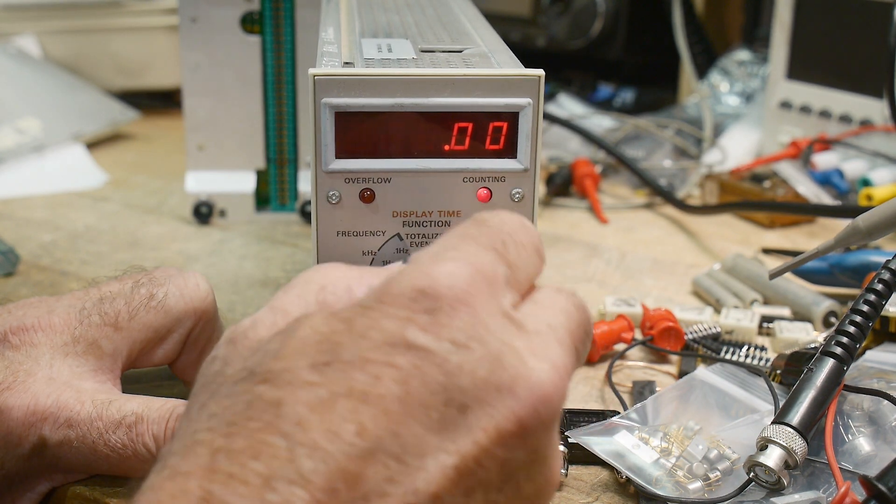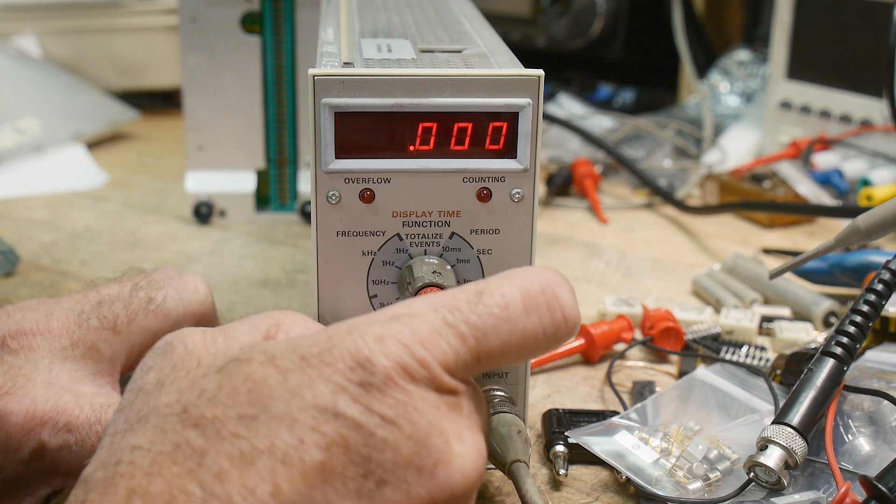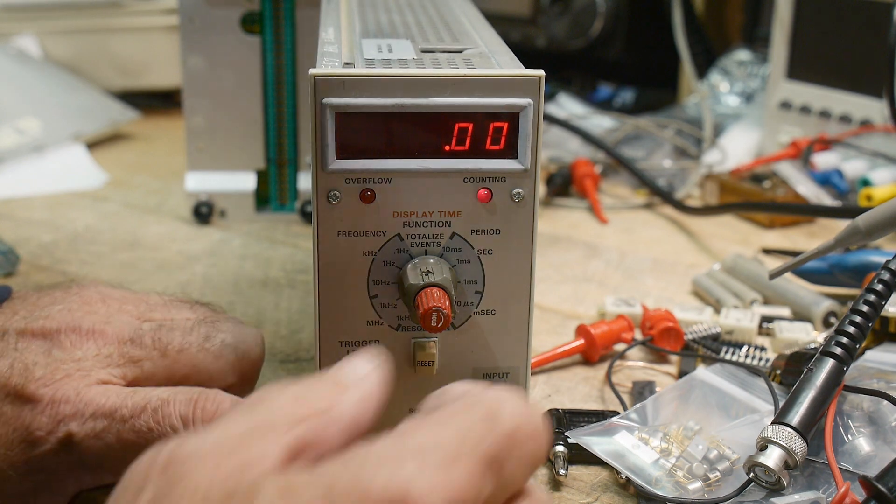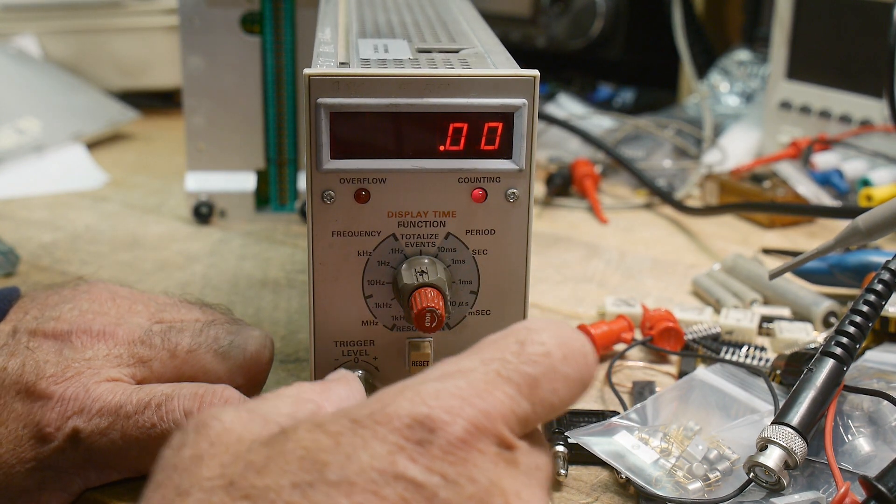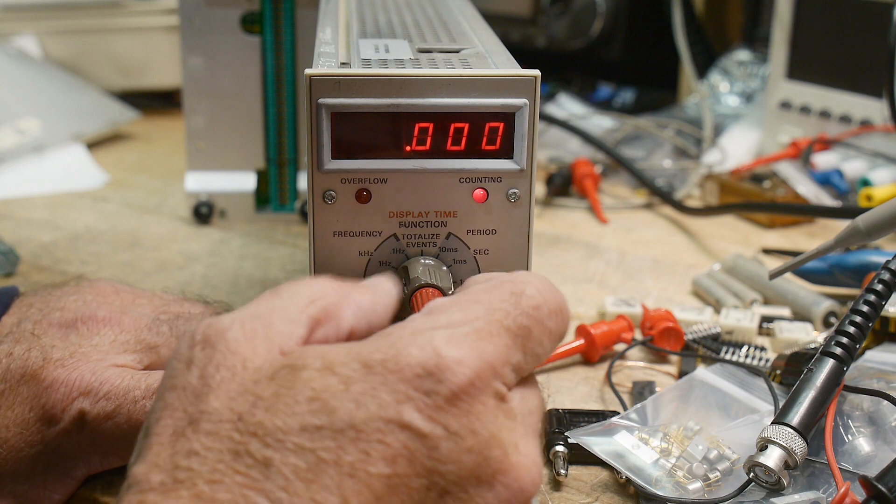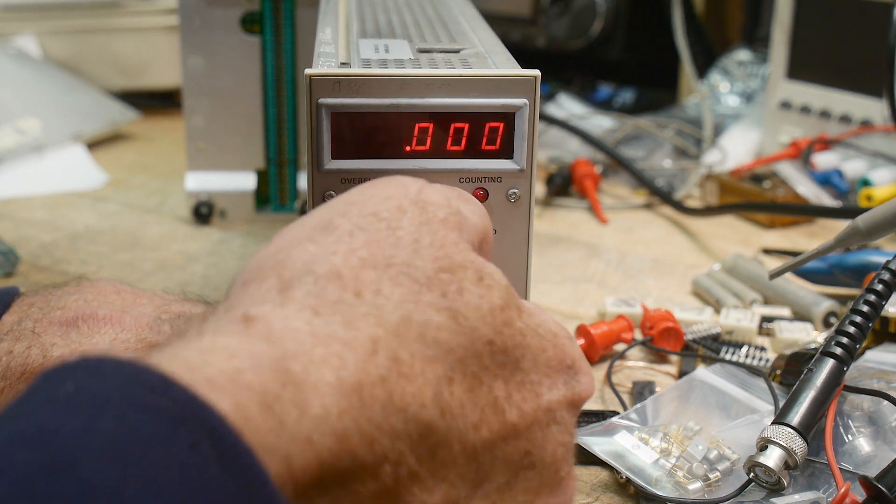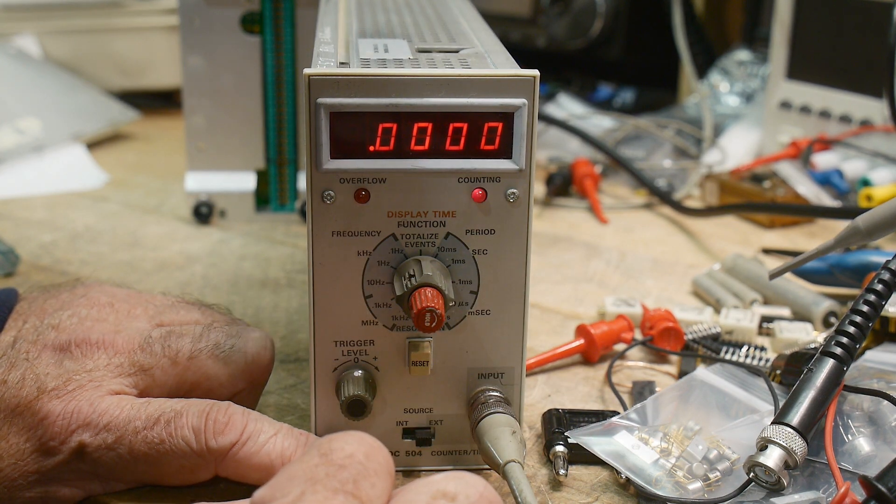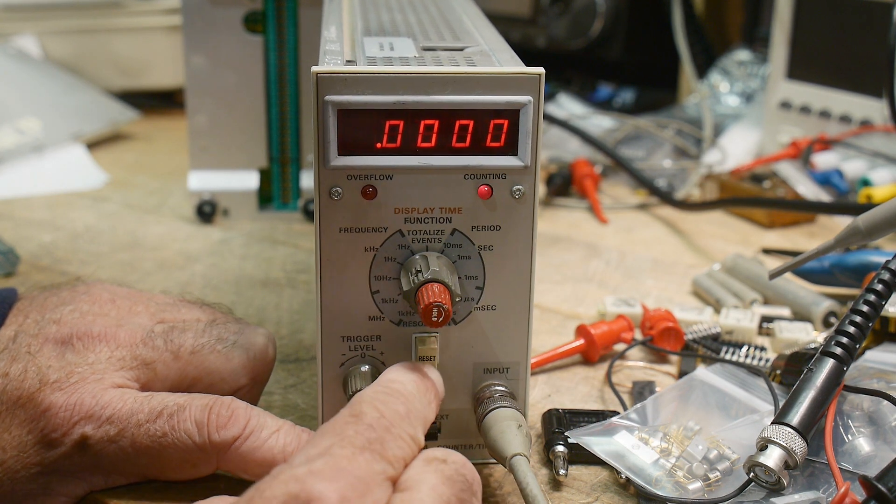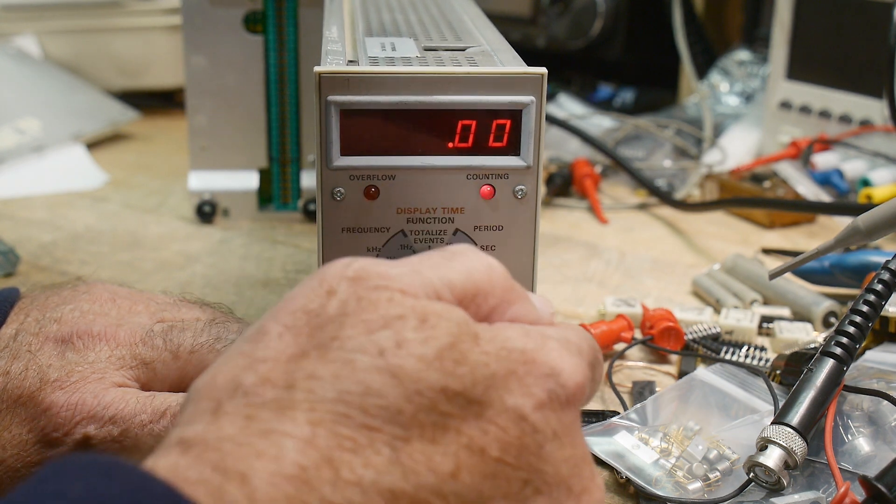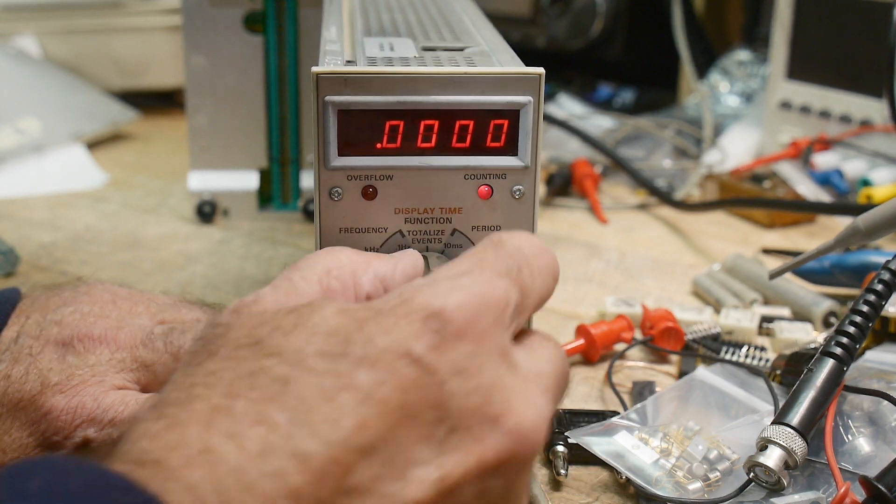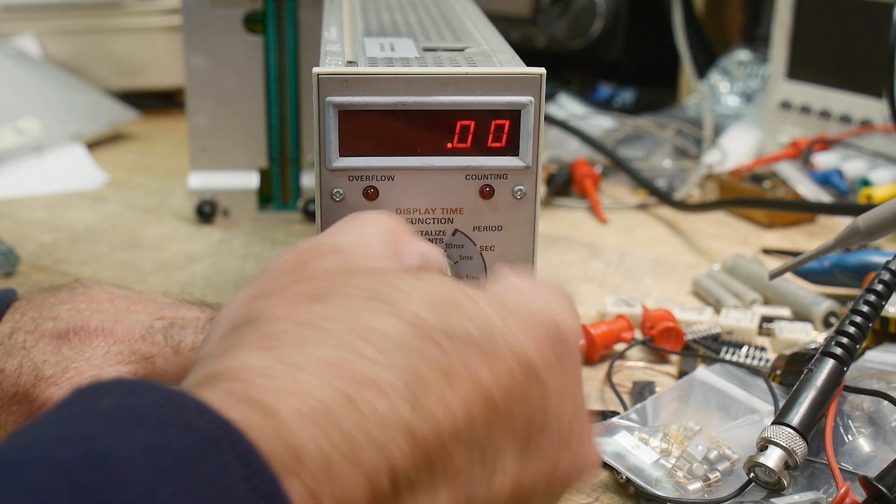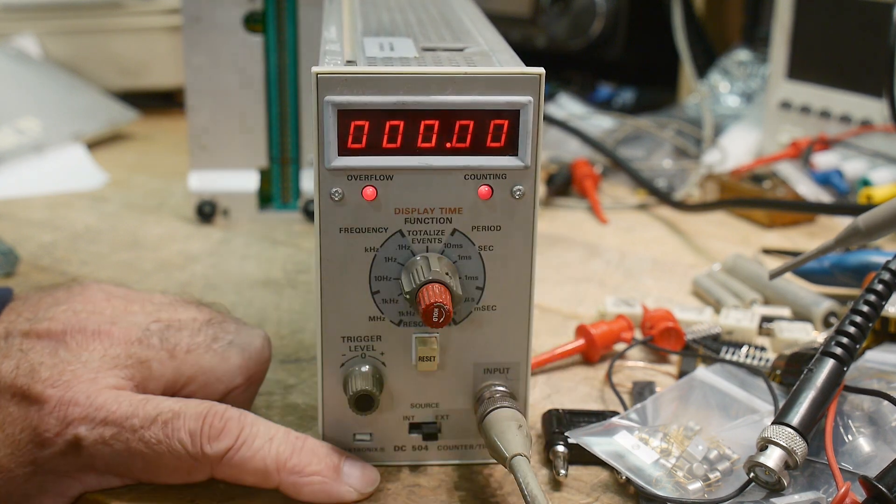And then here's counting. These are per seconds. How come the per seconds isn't working? I don't know. The per seconds doesn't seem to be working. Maybe it's going too fast. I don't know. Maybe it doesn't do. Let's hook it up to something slower and measure that.